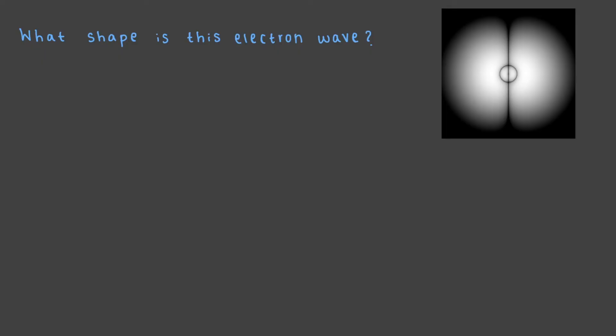What shape is this electron wave? That's right! Notice how this electron only has one nodal plane. That means that this electron is a p-shaped electron. Since it has three loops total, we call this electron wave 3p.